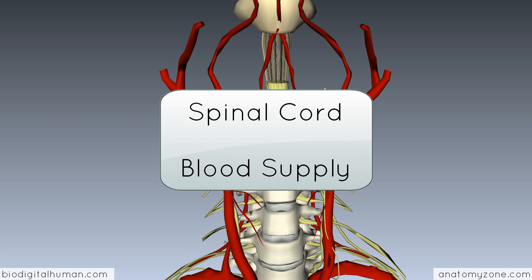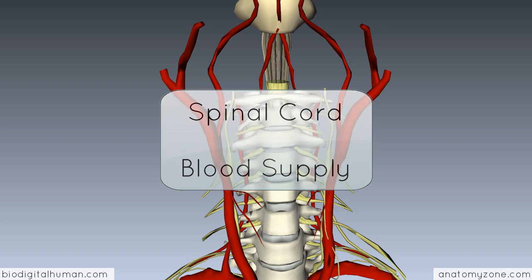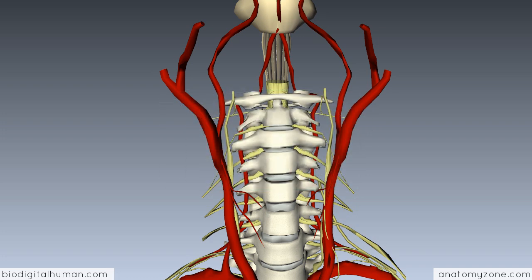Hey guys, this is Peter from AnatomyZone, and in this tutorial we're going to take a look at the blood supply to the spinal cord. I'll first look at the arterial supply and then move on to the venous drainage.